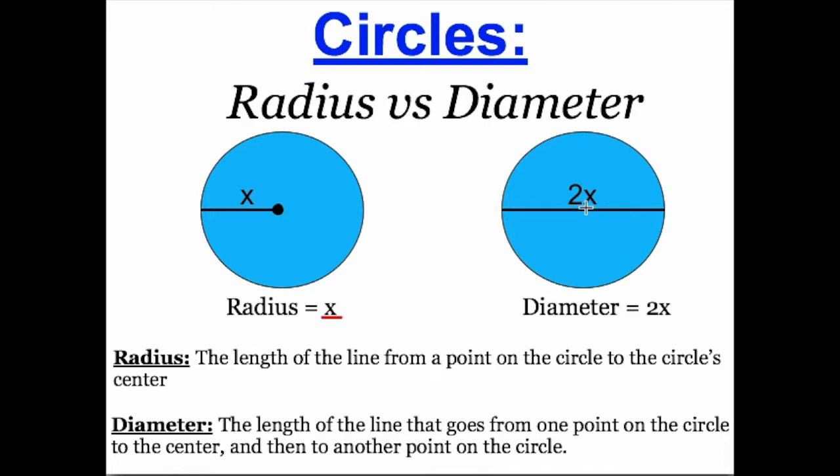We need to note that the length of the diameter is twice as long as the radius. So since we already said that the length of the radius is x, and since the diameter is equal to twice the radius, it makes sense that the diameter is equal to 2x.